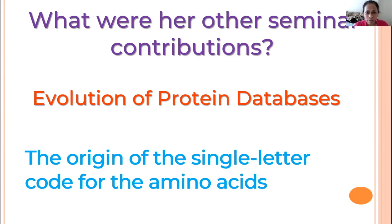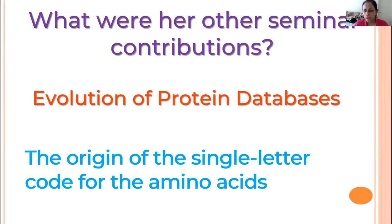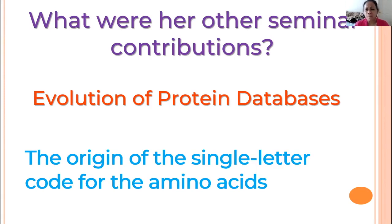She also came up with a single letter code for amino acids. I'm sure you all know what the single letter amino acid code is. Is there any reason why she came up with a single letter amino acid code? For example, glycine — GLY — is G; alanine — ALA — is A. Do you know why? Yes, efficiency — but other than efficiency, of course it's very efficient.